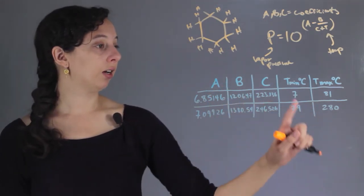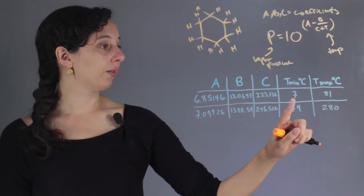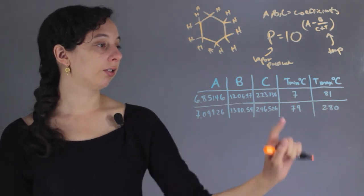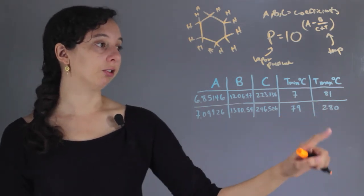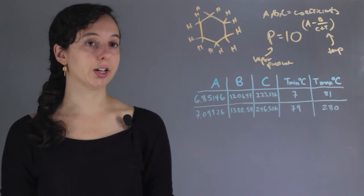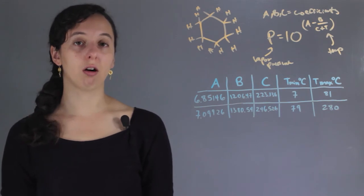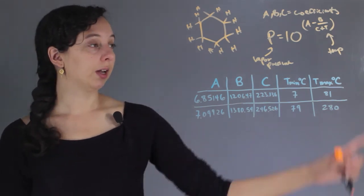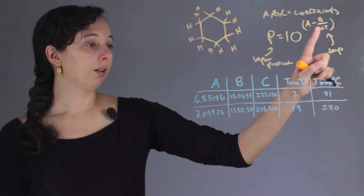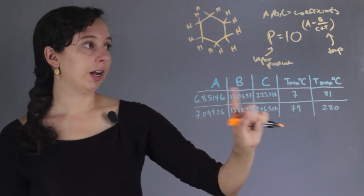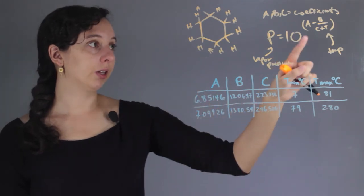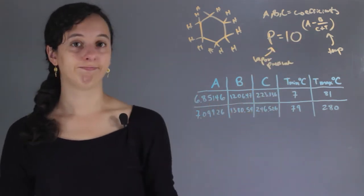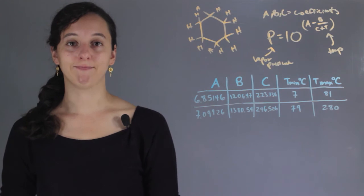The range of 7 to 81 degrees Celsius, and the range of 79 to 280 degrees Celsius. To solve, you just need to find the temperature that you want, plug it in, find the appropriate A, B, and C, plug those in, and you'll have your estimated vapor pressure. That's it.